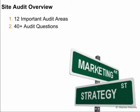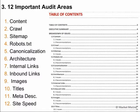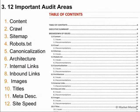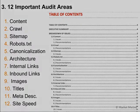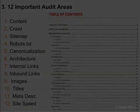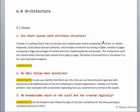We're at about 9 of 12 important areas after this section, and 40 different audit questions that we'll be using for this site audit document. We're going to create a table of contents in these 12 important areas. In this section we'll be covering information architecture, internal links, and inbound links and questions surrounding those that you can incorporate into your site audit document.